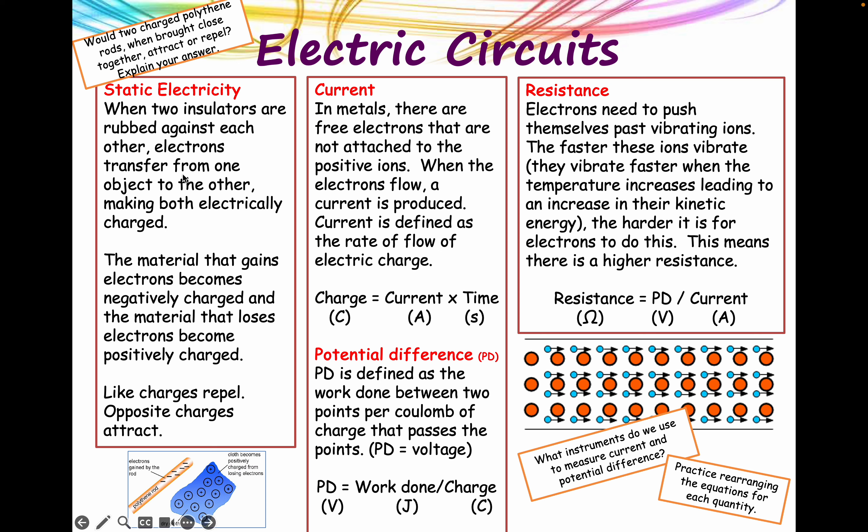Rubbing two materials together often causes static electricity to build up. That happens, for example, when you're walking with rubber shoes on carpets - the two materials. One will gain electrons and one will lose electrons. The one that gains electrons becomes negatively charged, and the one that loses electrons becomes positively charged. You may have done it with a balloon and managed to get it to stick to the wall.